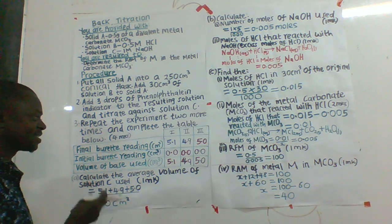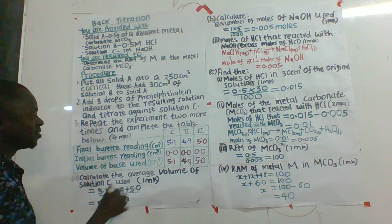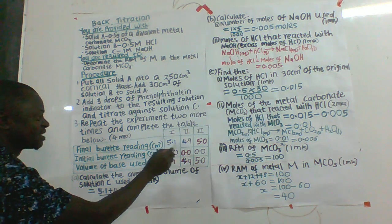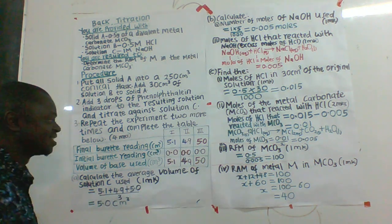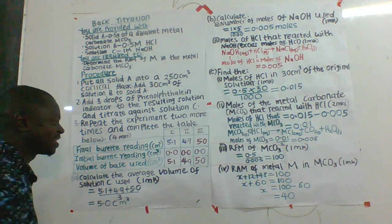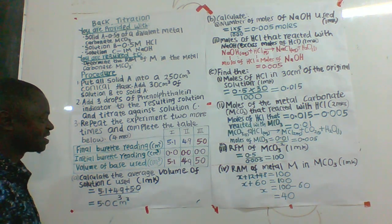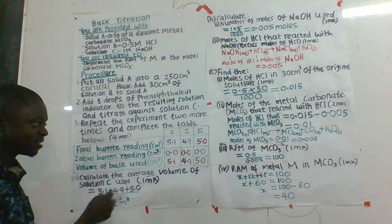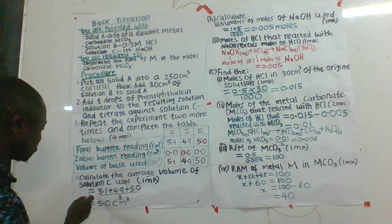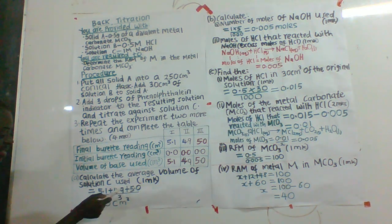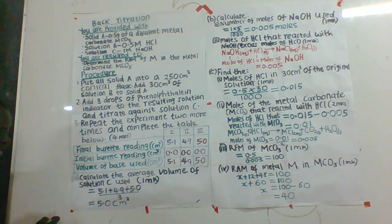There is a second mark: all values in the table should be recorded to one decimal place, and that attracts another mark. Number three is a mark called the principle of average. To get this mark, your average values should lie within a range of plus or minus 0.2.